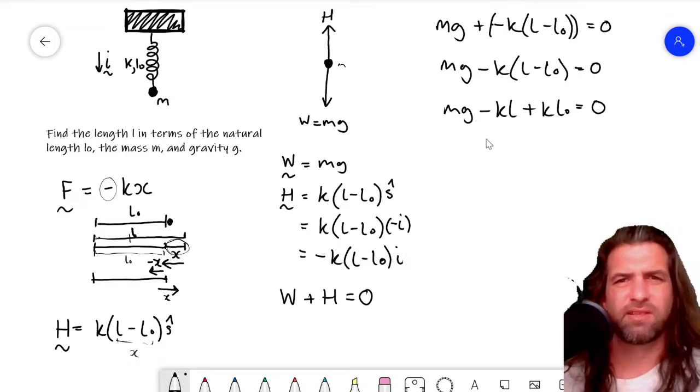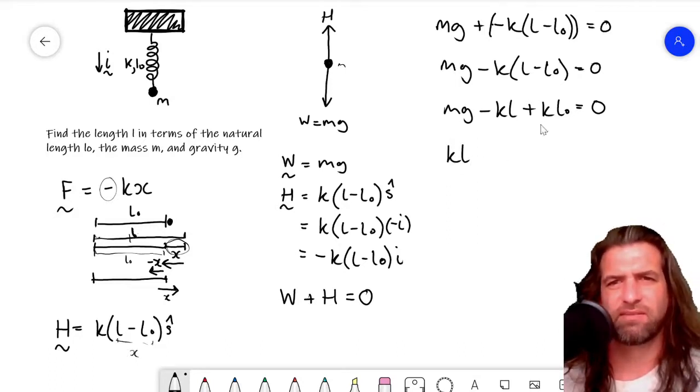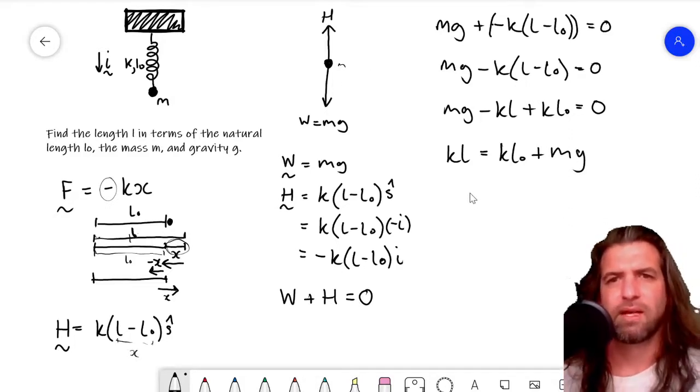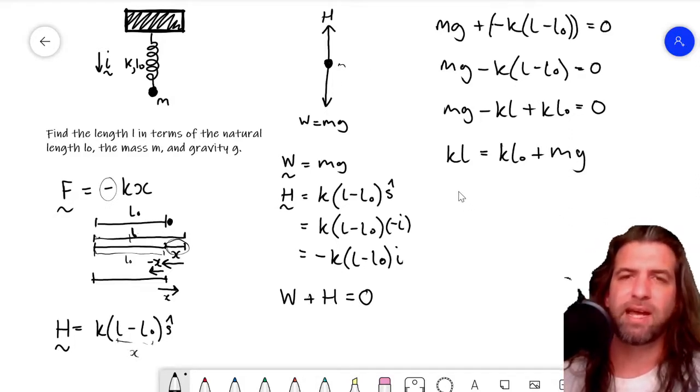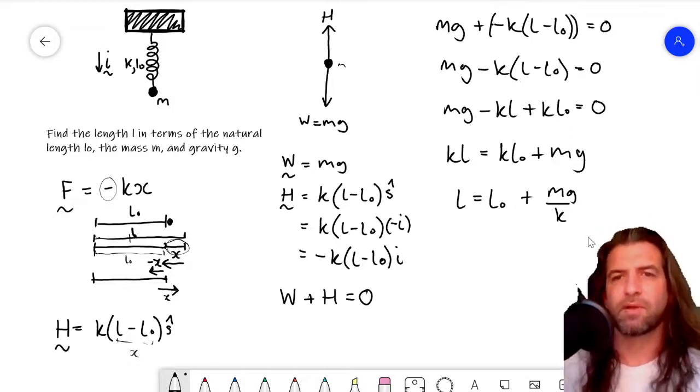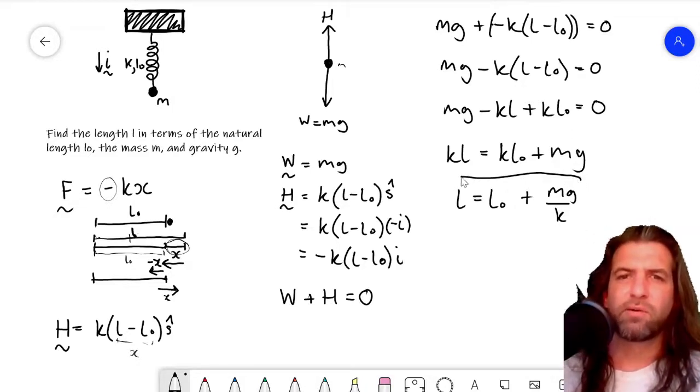Right. Now we're going to try and get it in terms of L. So we're going to find L. So we're going to put kL to this side, move it over here and then just rewrite these two. I'm going to put kL0. So I've just switched these round. It doesn't matter, they're both plus, plus mg. And now we divide both sides by k. So we've got L minus k over k is just one. So you've got L = L0 + mg/k. And that is the final answer.